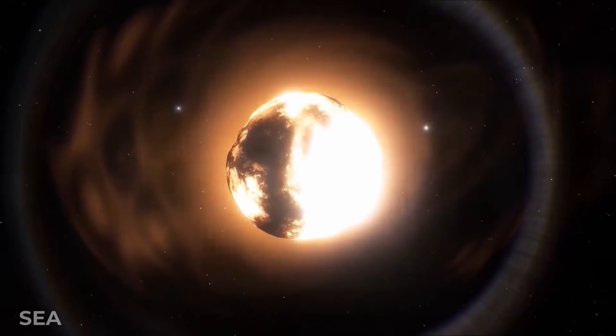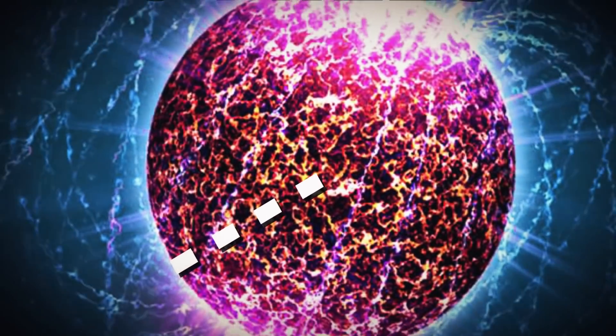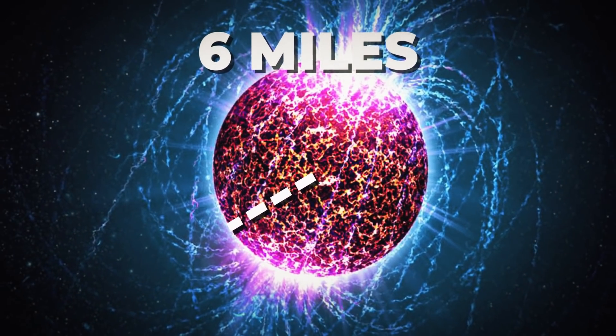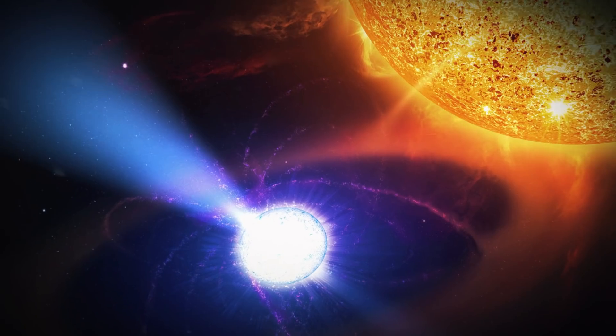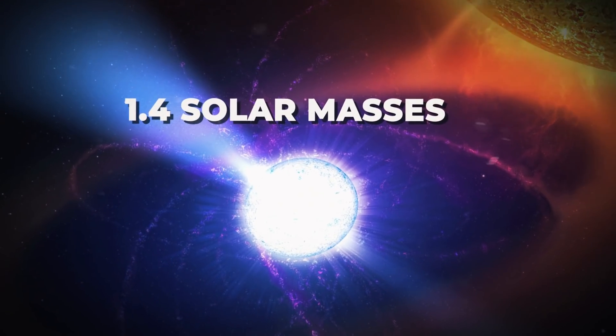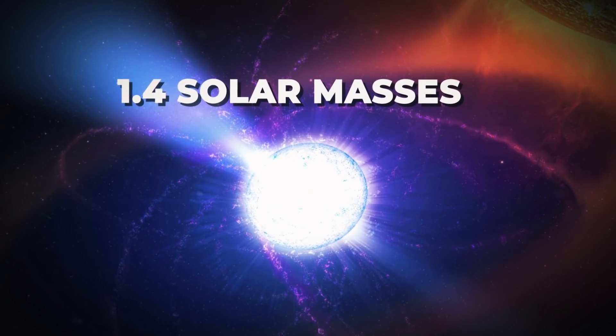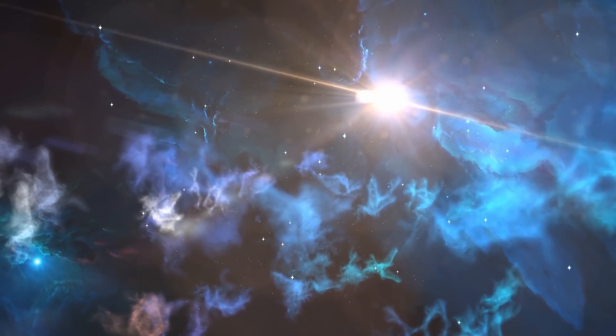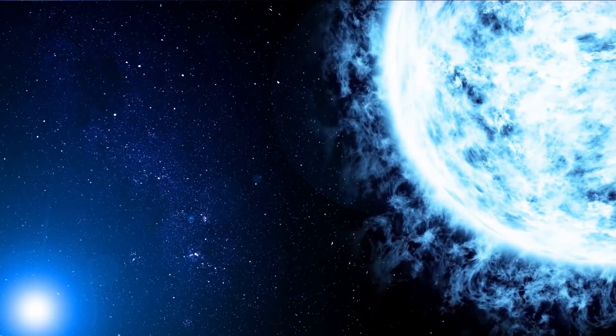Neutron stars typically have a radius of about 6 miles, but with a mass of about 1.4 solar masses. So yes, they are small, but also super heavy and dense.